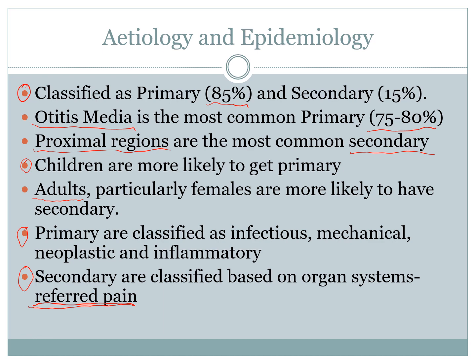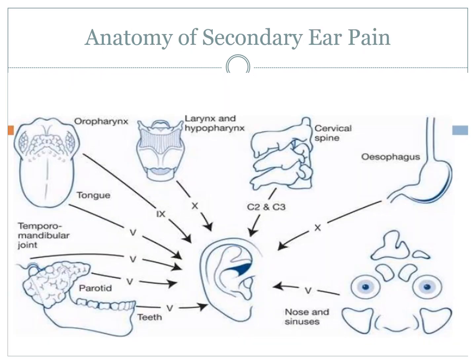The ear itself is made up of a very complex neural network that innervates all around the ear, resulting from embryonic development. When you're developing, your ear is mixed in with a lot of your other organs, which means it has this neural connection. The ear shares a neural network with other organs, which can lead to numerous potential causes of referred pain.